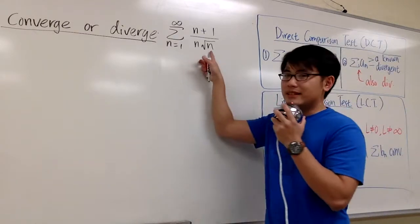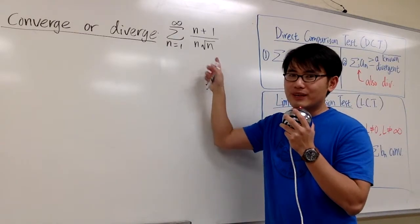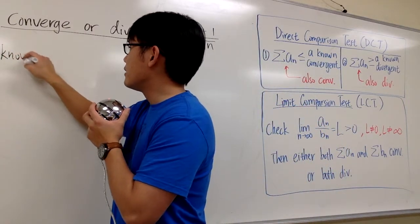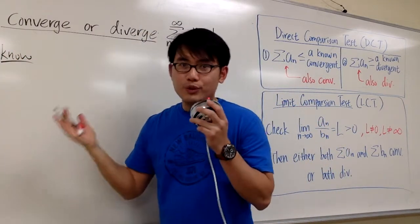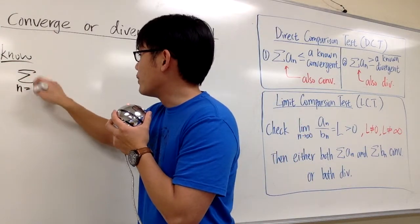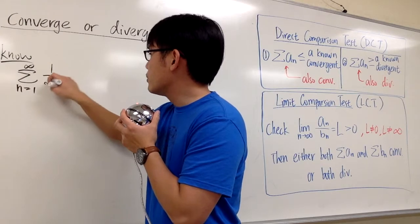Well, just as I said, we didn't want to have the square root of n over there. This is how we can do. I'm going to come with something that we know much better, which is 1 over square root of n. So sigma as n goes from 1 to infinity, 1 over square root of n.